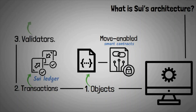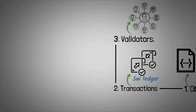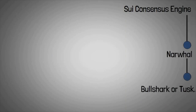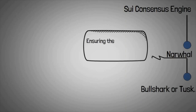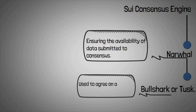Third, Validators: the entire Sway network is handled by independent validators, each of which runs its own instance of the Sway software on a separate machine. Another aspect worth highlighting is the Sway consensus engine, which comprises Narwhal and either Bullshark or Tusk. Narwhal is responsible for ensuring the availability of data submitted to consensus, while Bullshark or Tusk is used to agree on a specific ordering of this data.